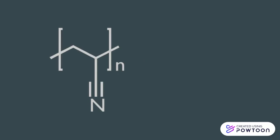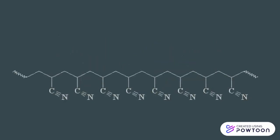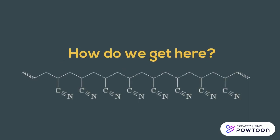In this structure for polyacrylonitrile, the N represents many repeating units of the single monomer shown here, potentially giving us something that actually looks more like this, which continues on and on for both the left and right ends. So how do we get this long chain of monomers?